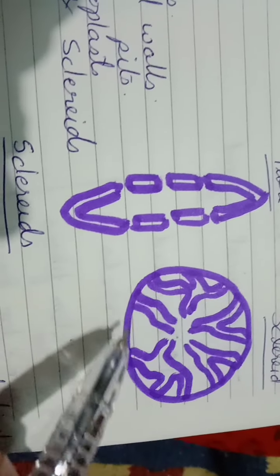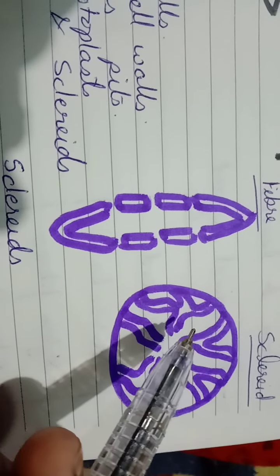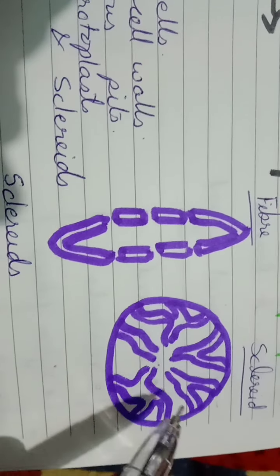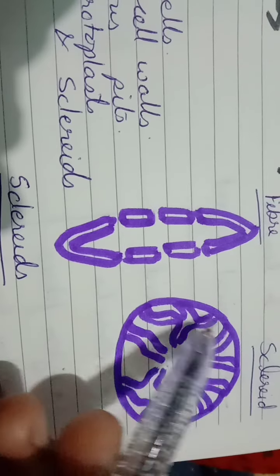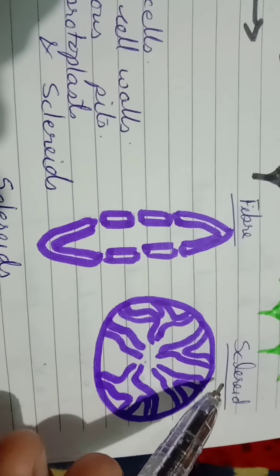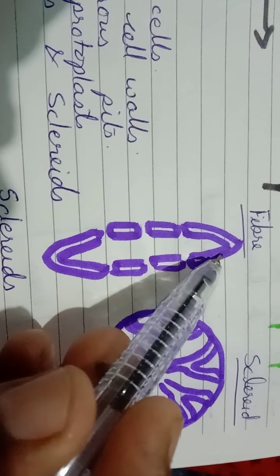You can see this lumen, this cell wall which is very thick, and these ending parts are the pits. So, sclereids and fibers.